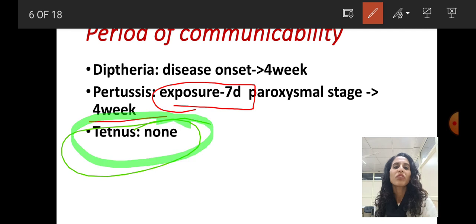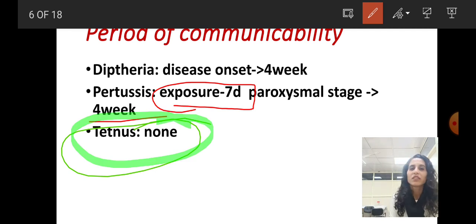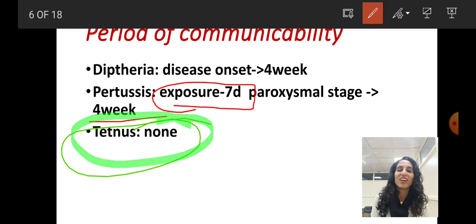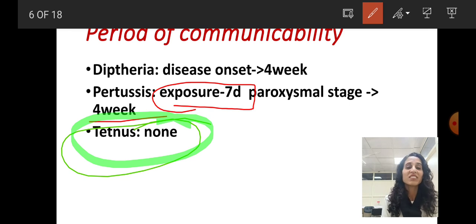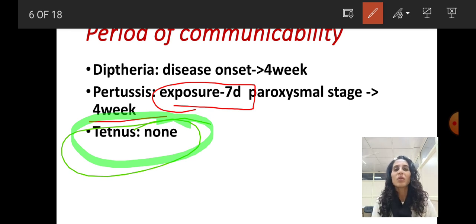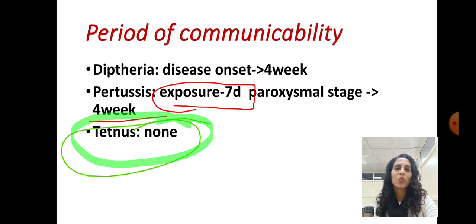Why is there no period of communicability for tetanus? You have to tell me in the comment section below. For tetanus, it can be transmitted only via infected soil or an infected surface — never from a case to a normal person directly. So transmission from case to healthy person is not possible for tetanus.